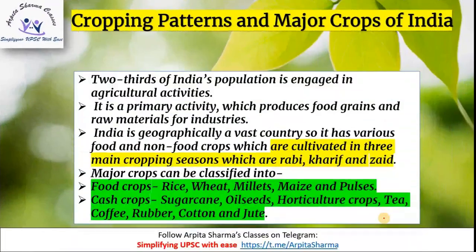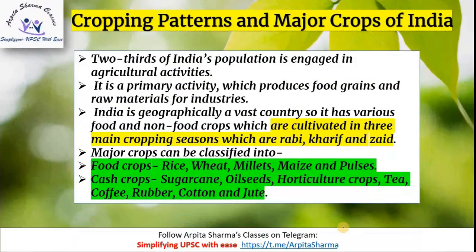Let's begin. Looking at cropping patterns and major crops of India, two-thirds of India's population is engaged in agricultural activities. In terms of employment, the agriculture sector gives the most employment in India. It is the primary activity which produces food grains and raw materials for industries. India is a geographically vast country, so it has various food and non-food crops.